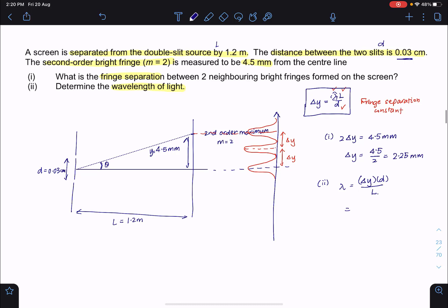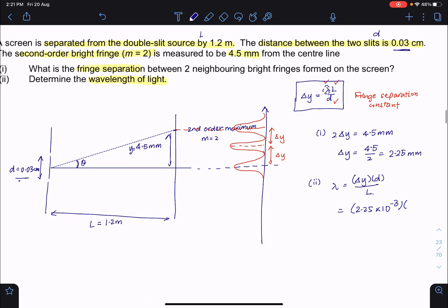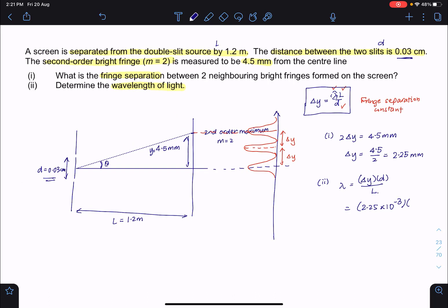So your delta Y is 2.25 mm. So I need to convert this. So I multiply by 10 to the power of minus 3. And then your D. D itself given in the question is 0.03 cm. 0.03 times 10 to the power of minus 2. Converted to meters. And L is 1.2. And with this, we will get answer to be 5.62 times 10 to the power of minus 7 meters.